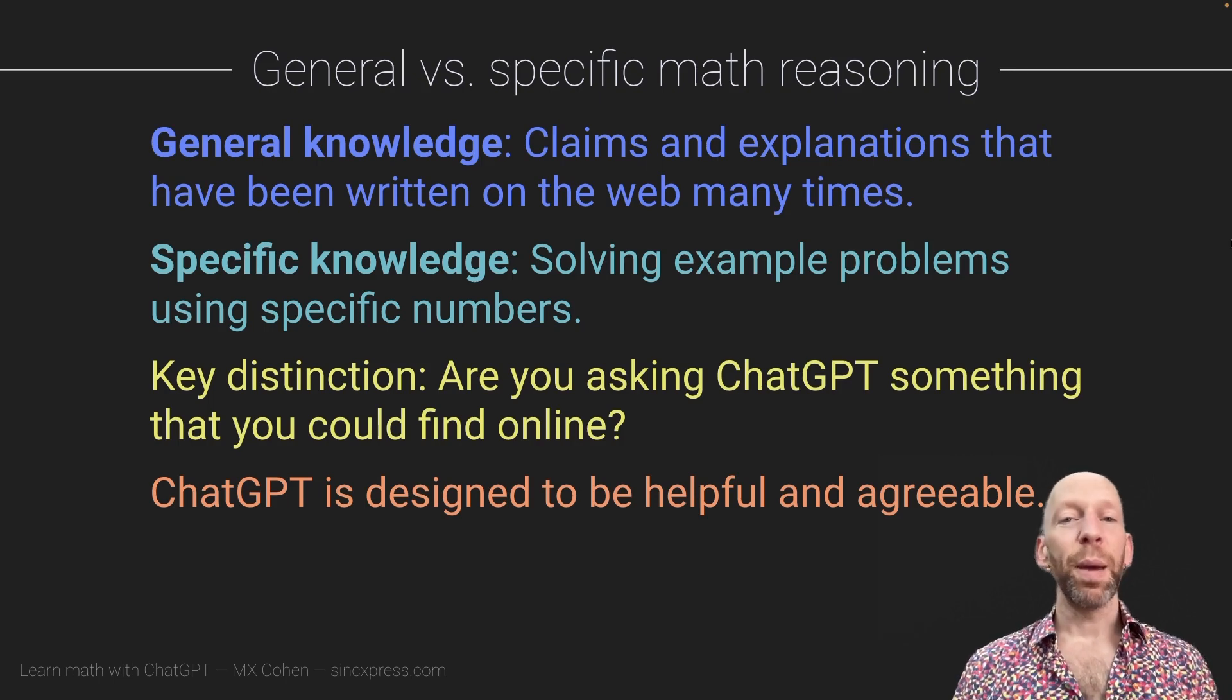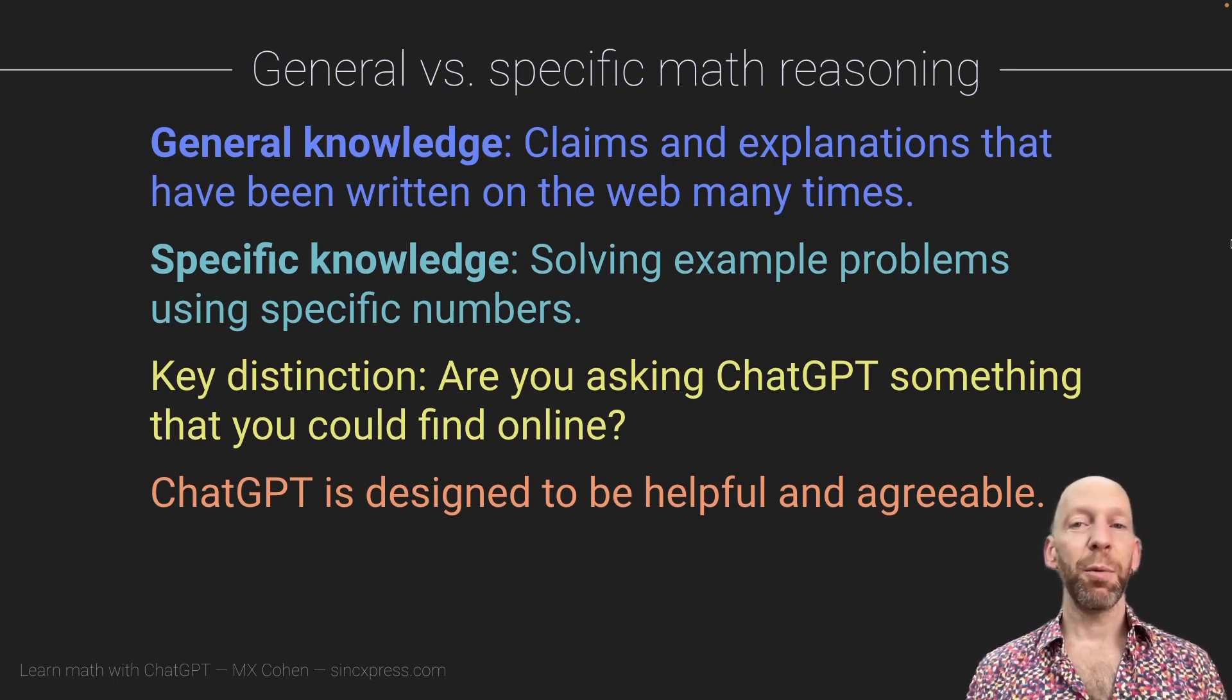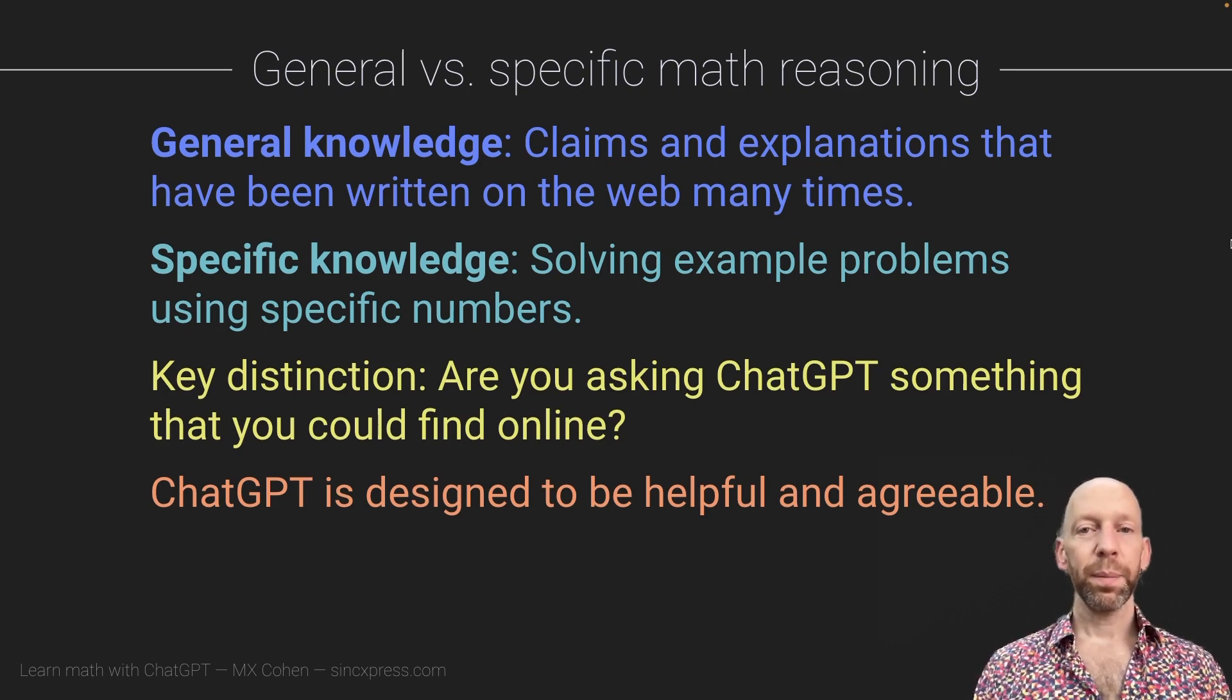So if you make a mistake, it's going to be reluctant to tell you that you're wrong, and instead, ChatGPT will often take the blame itself, for example, by saying that it wasn't clear enough or that there was a miscommunication or a misunderstanding. So that's just something in general to keep in mind when you're asking ChatGPT to correct errors in your reasoning.